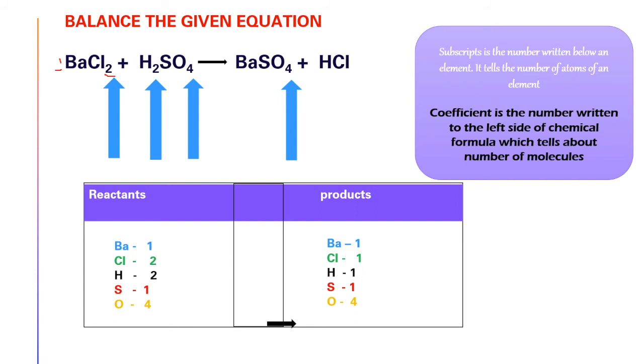After writing, now you go to write the difference. The difference between the left-hand side atoms and the right-hand side atoms. For barium, the reactant side 1 and the product side 1, so 1 minus 1 gives 0. The same way we are going to write the difference of atoms of all the elements. Now if you see, except chlorine and hydrogen, for remaining all atoms it is 0. That means they all are balanced.